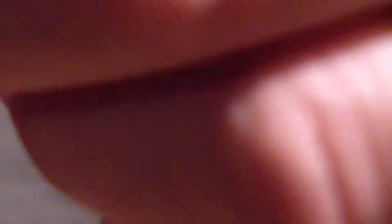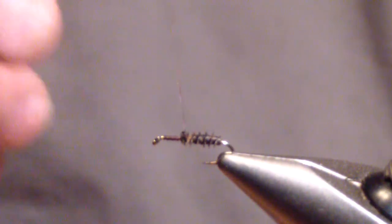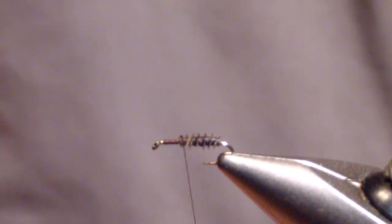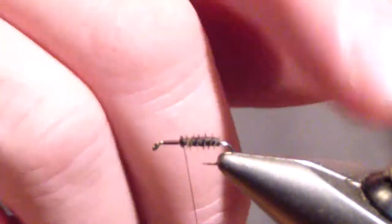It doesn't spin well. Once tied in with that thread as a support, it's a very durable body. I like that it gives a segmented and slightly fuzzy look to the abdomen, as a caddis larva actually has.